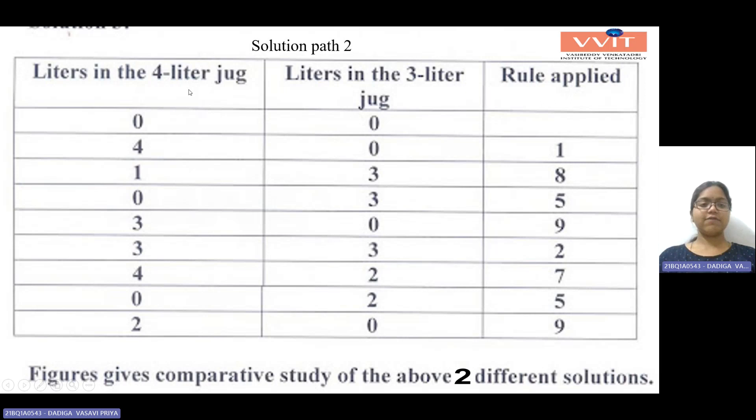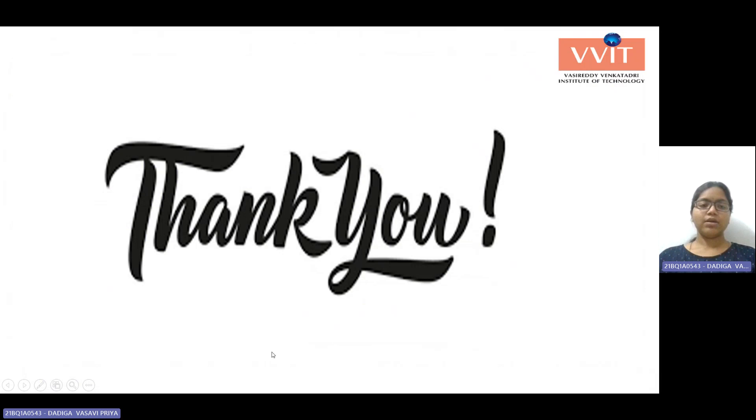Our goal is to get 2 liters in the 4-liter jug. So the 2 liters of water is poured into the 4-liter jug and the 3-liter jug becomes empty, done using rule 9. Finally we have reached our goal state by filling the 4-liter jug with 2 liters of water. So these are 2 different solutions. This is all about how to solve the water jug problem for 4 liters and 3 liters.